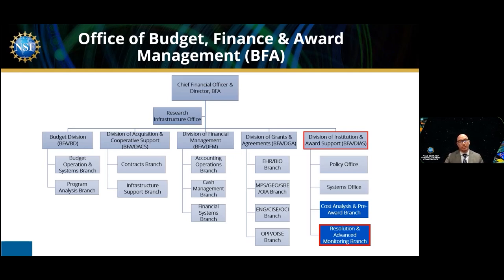I'd like to begin by giving you a view of our office. Our division, the Division of Institutional Award Support — outlined in red on the slide — falls under the Office of Budget, Finance, and Award Management, which is essentially the office of the CFO for NSF. Below the Division of Institutional and Award Support, you see my branch, the Resolution and Advanced Monitoring Branch, shaded in darker blue with the red trim. Above that is the Cost Analysis and Pre-Award Branch, which we consider our sister office, and we're going to go over in more detail the functions that each of these offices performs.